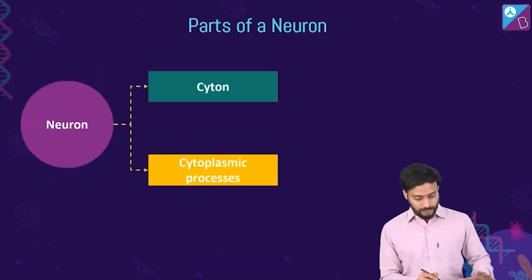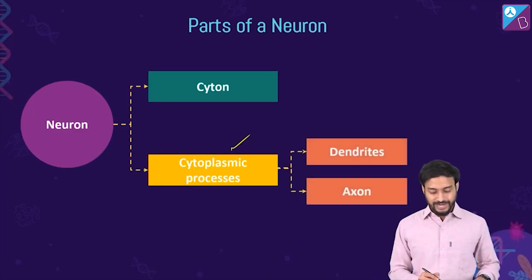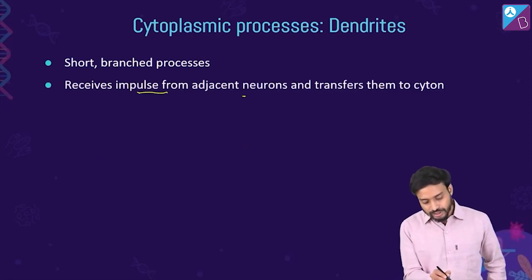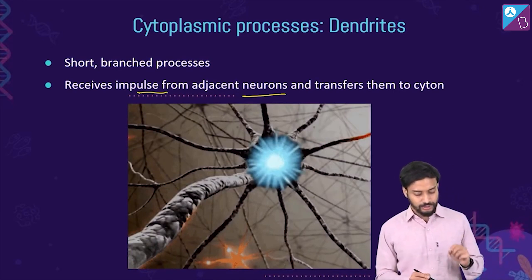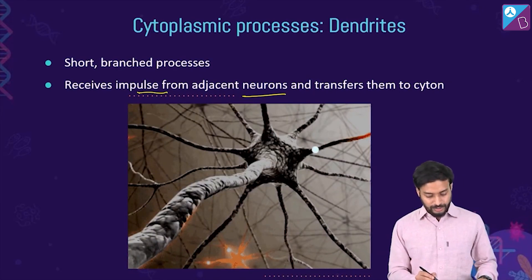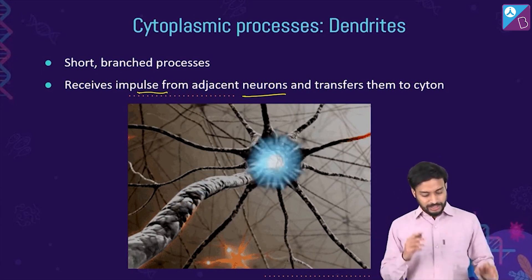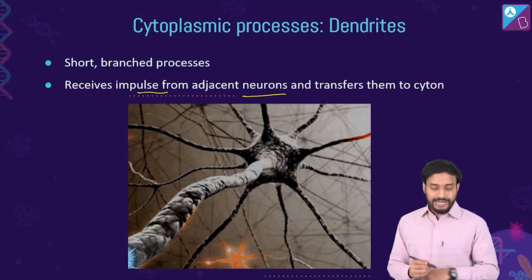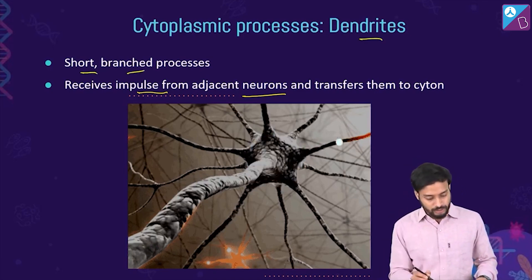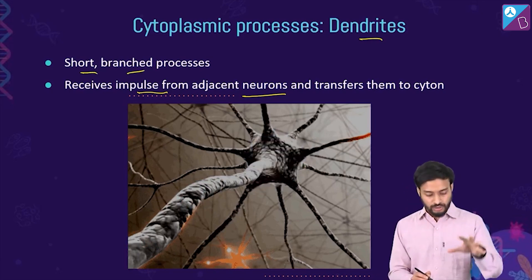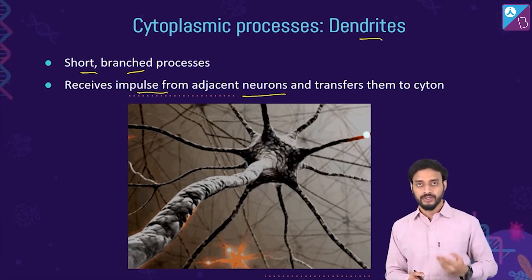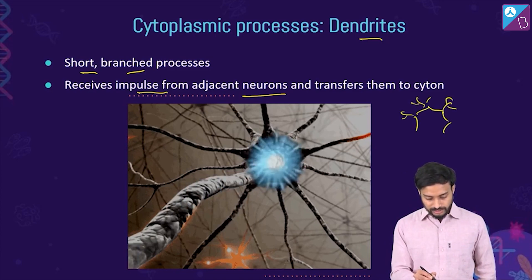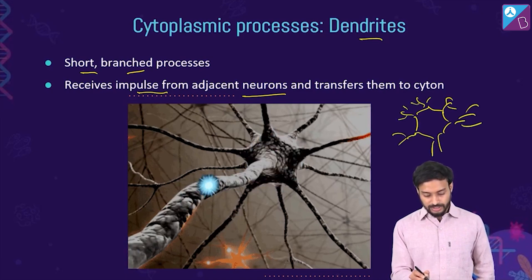The cytoplasmic processes of a neuron include dendrites and the axon. Dendrites are short, branched processes that receive impulses from adjacent neurons and transfer them to the cyton.